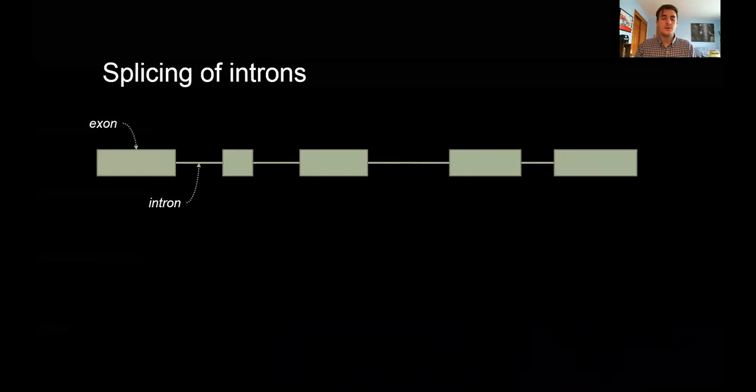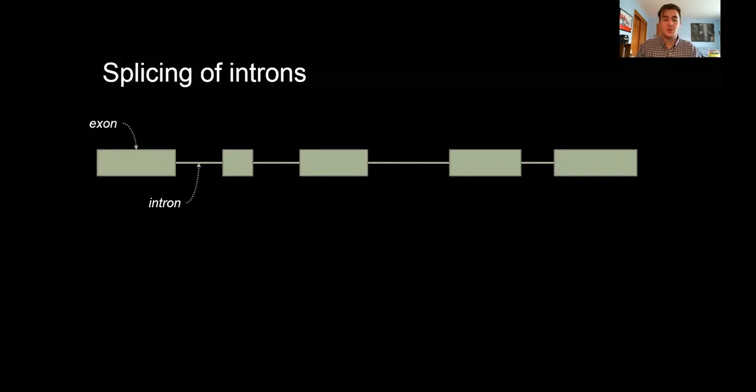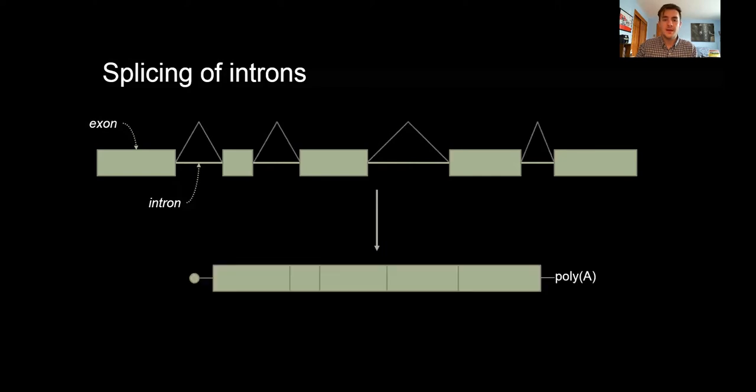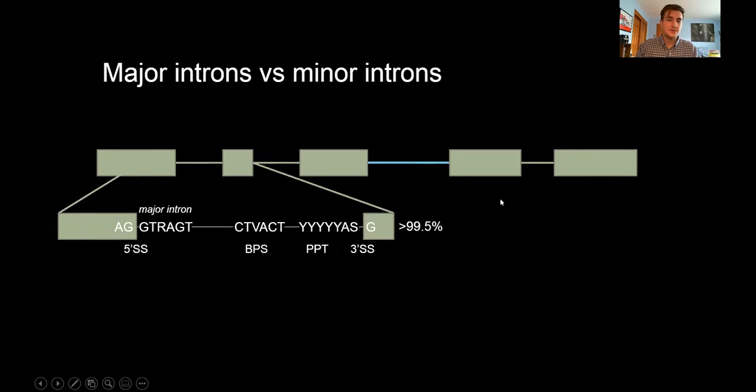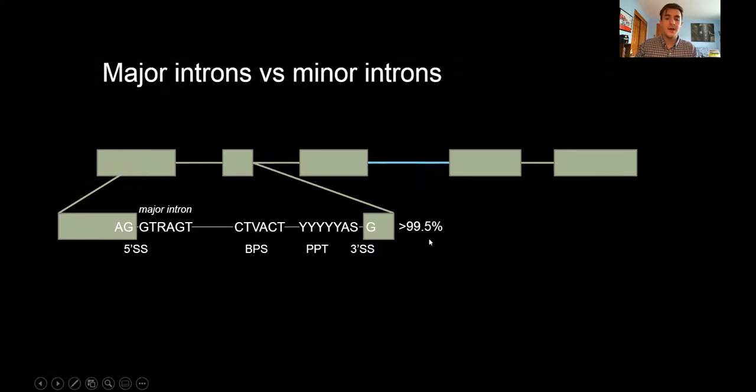As you all know, eukaryotic genes possess exons and introns, and for proper gene expression, these introns must be removed and the exons ligated together in the process of splicing, which is executed by the spliceosome. Eukaryotic genes possess two types of introns: major introns shown as green lines, which make up greater than 99.5% of all introns, and these are defined by specific nucleotide sequences at the 5-prime splice site, the branch point sequence, and the 3-prime splice site, as well as the presence of a polypyrimidine tract upstream of this 3-prime splice site.